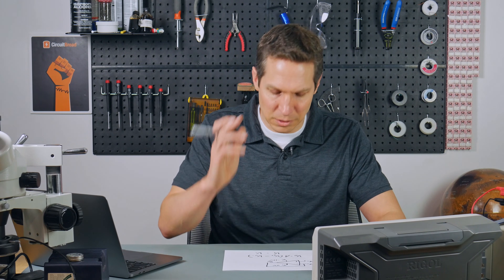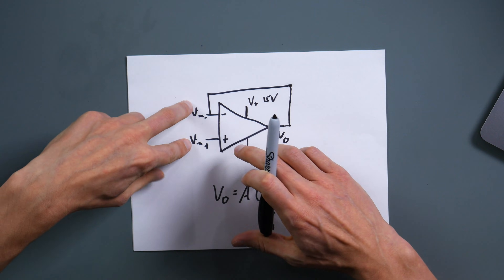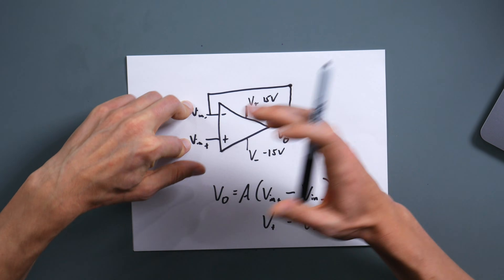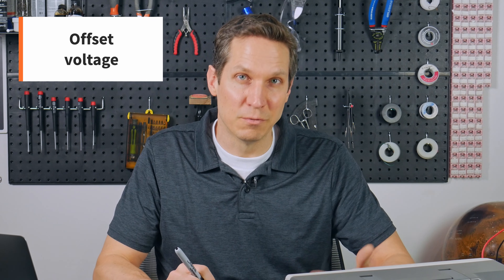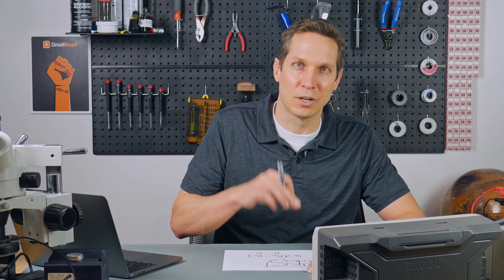The next thing to think about with a real operational amplifier is that while I said these voltages are always exactly the same, in real life they're not going to be exactly the same — there's going to be some small minute difference. That's called the offset voltage. The offset voltage is usually a very, very small number, and normally you can ignore it. But depending on the precision required, it might be something you need to take into account.